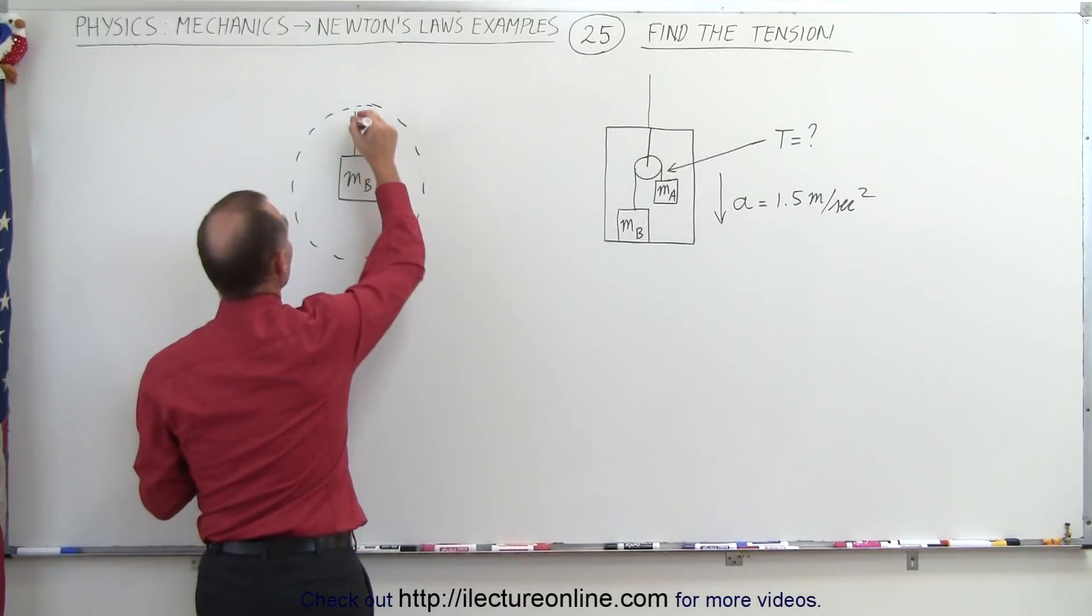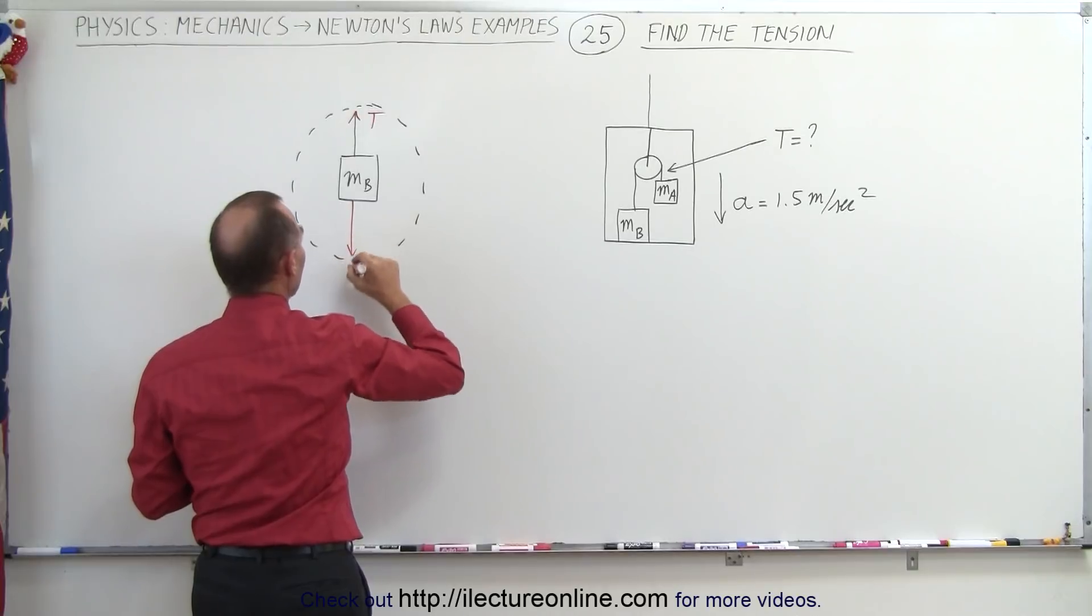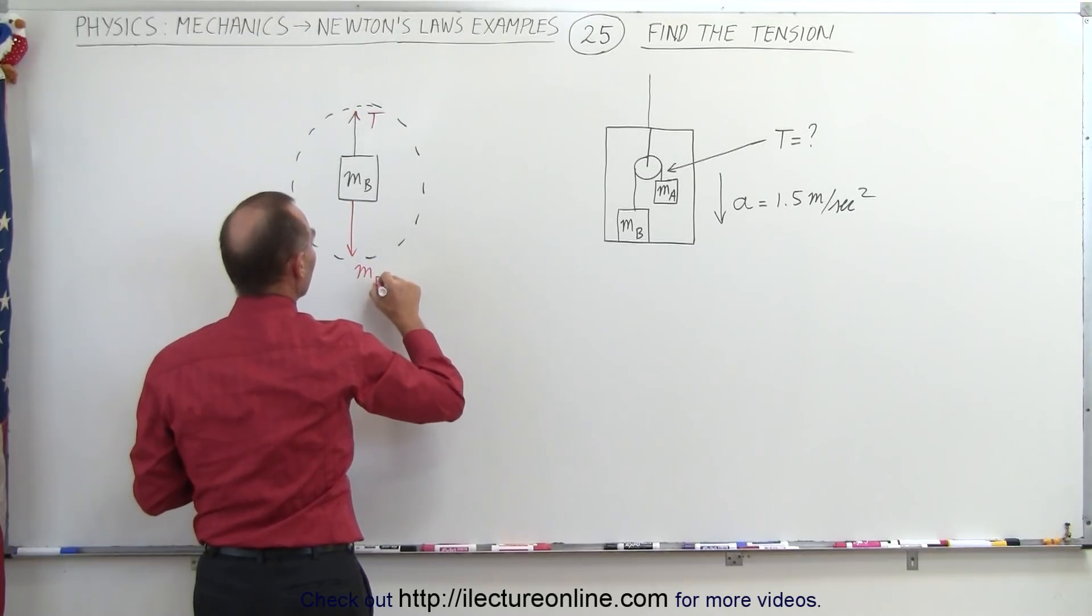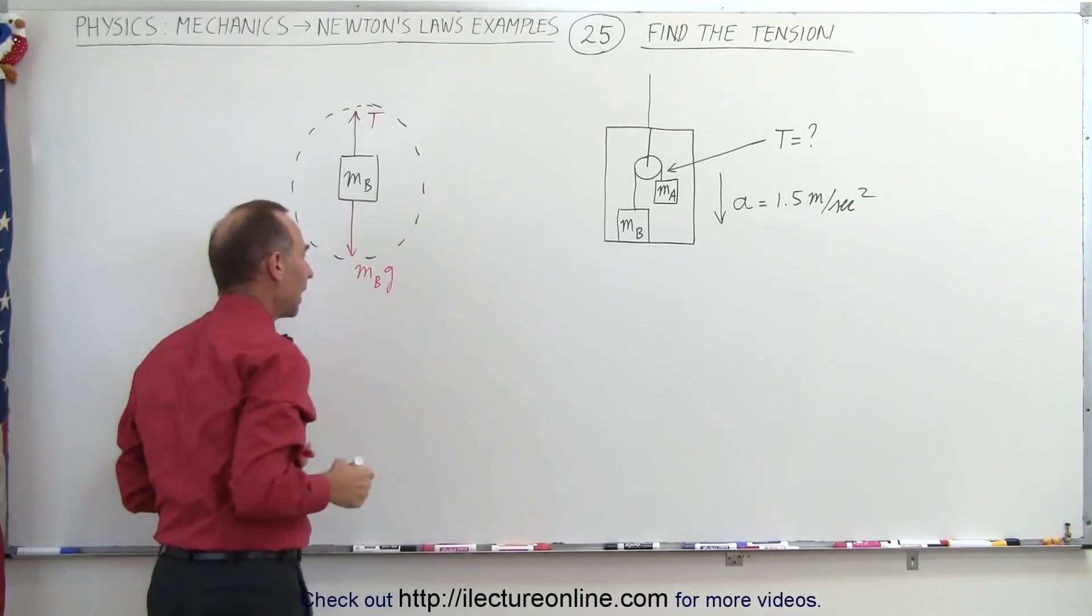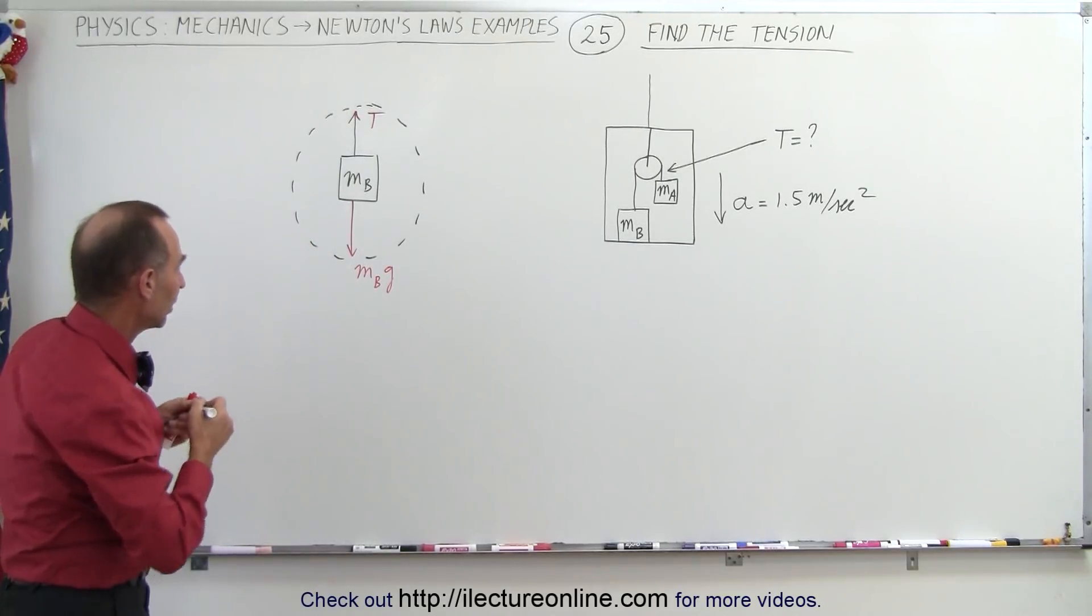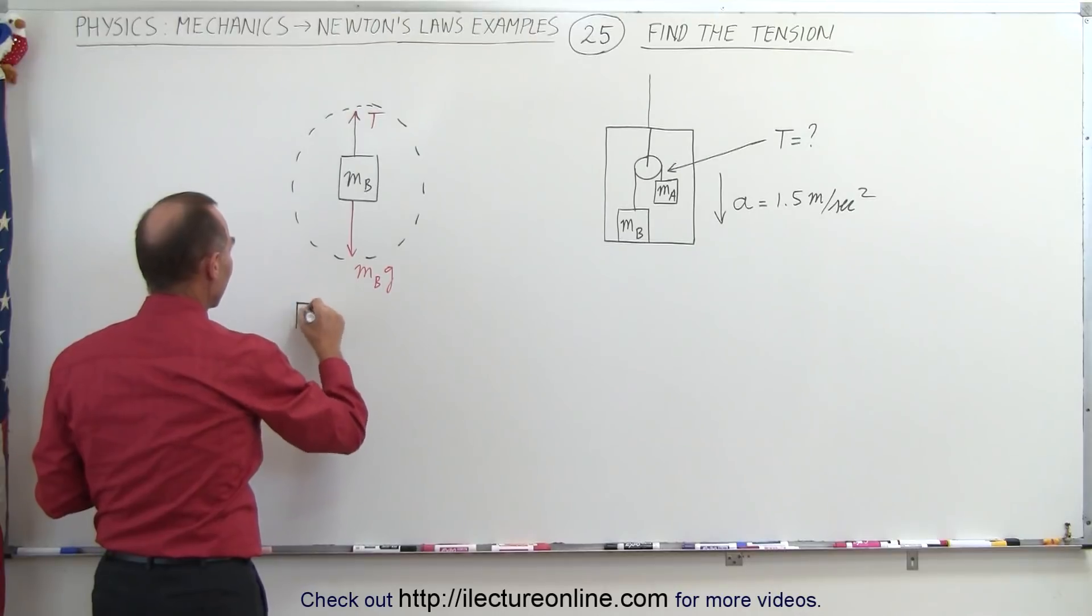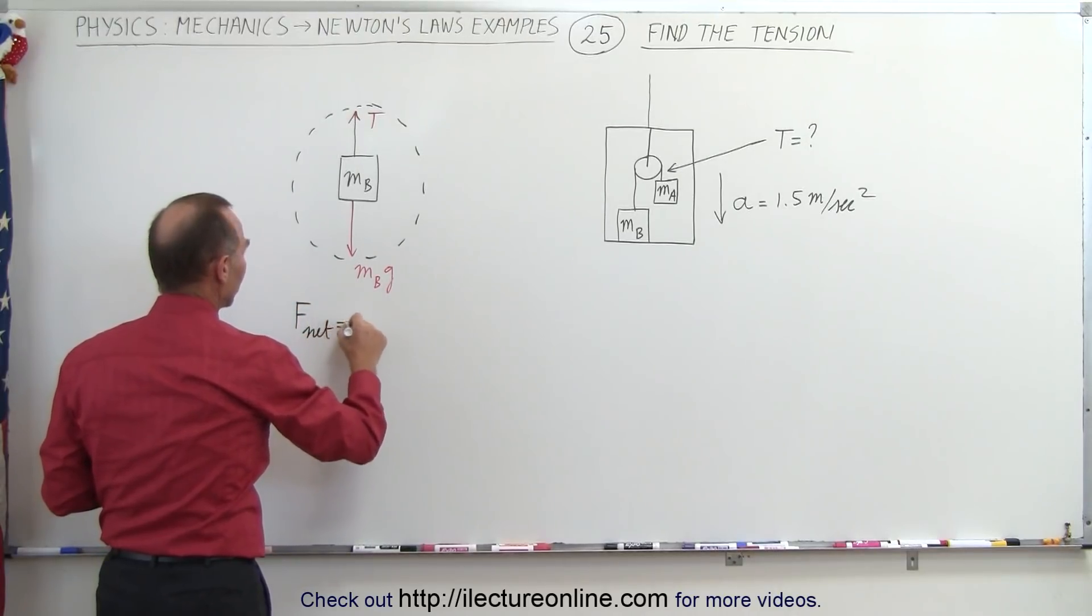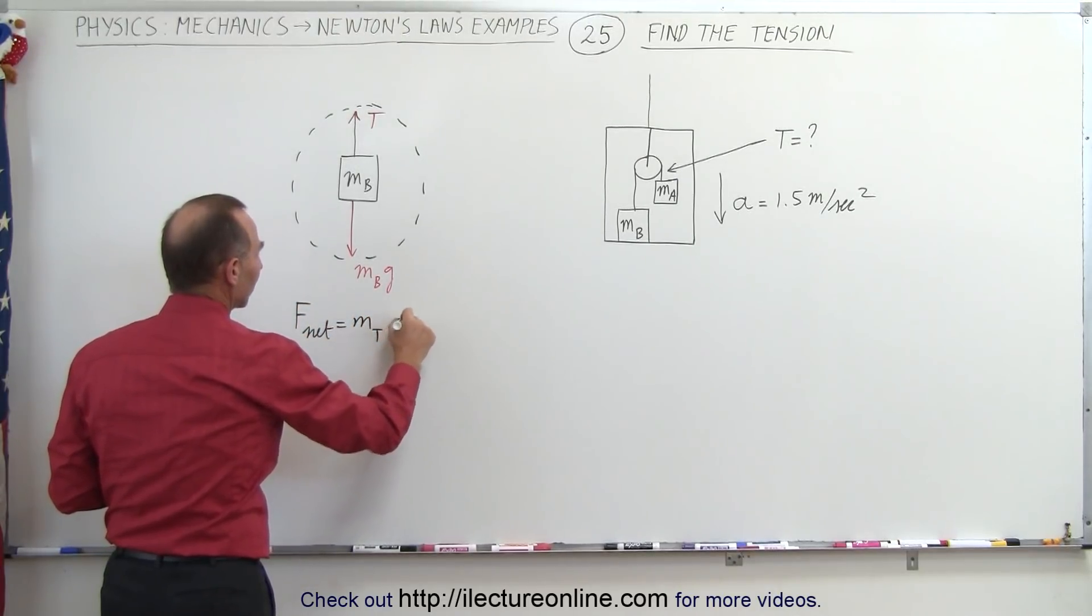Well, we can assume that there's going to be tension pulling upward, and then there's going to be the force of gravity which is m_b times g acting downward. Then we use the equation of Newton's second law that says that F_net equals the total mass times acceleration.